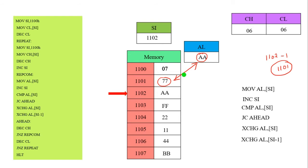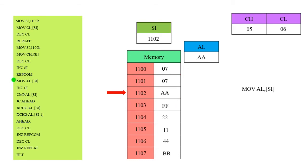Now the first comparison step is completed. After completion we decrement the CH value. Why? Because the next comparison is going to take place. The CH value becomes 5. The necessary step: JNZ re-comparison. Now the program moves to the re-comparison label. MOV AL, [SI] — the SI value is 1102, which contains AA, and that value is moved into the AL register. Then we increment SI — value becomes 1103.